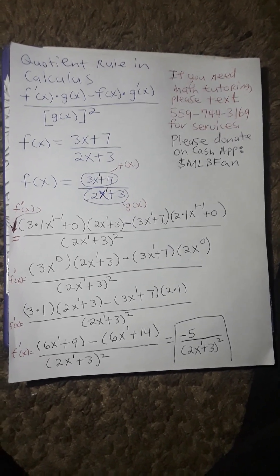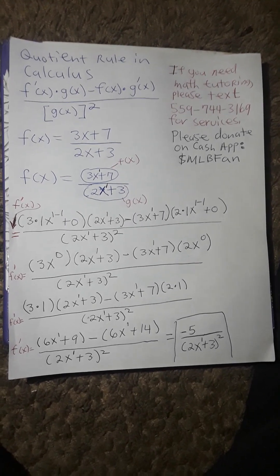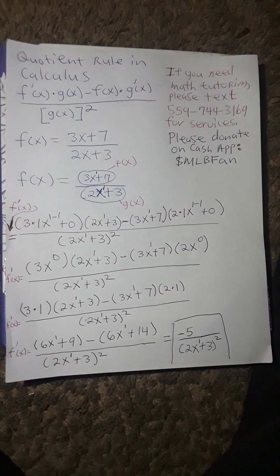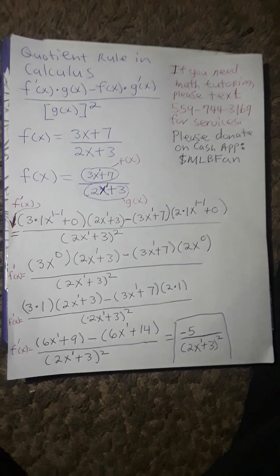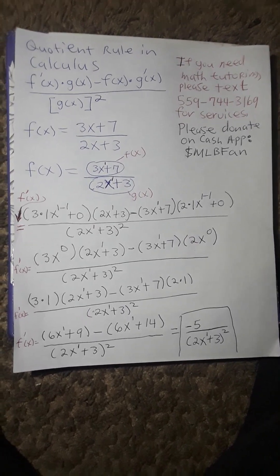So, 3x plus 7 will be your f of x and 2x plus 3 will be your g of x. Notice that I put the power of 1 above the x's in the numerator and denominator because there exists a 1 and will be easier to follow in the derivative calculation.